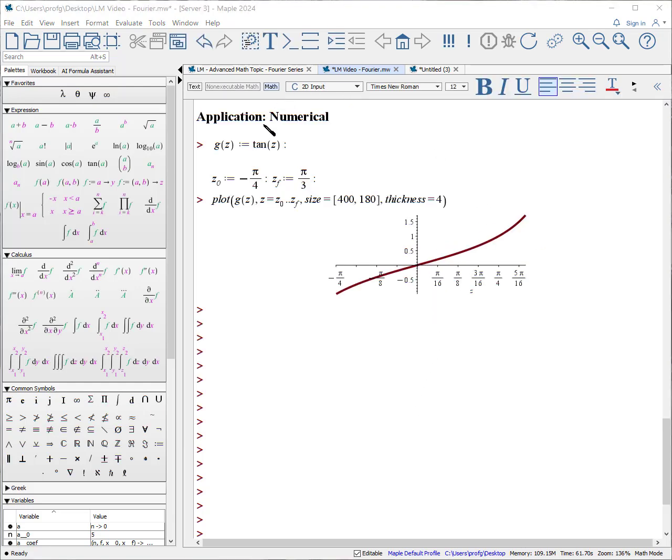The final example is not symbolic but rather numerical. Here is an example from minus pi over 4 to pi over 3 of the tangent. It turns out we're not going to find a closed form for a series approximation to this function between these two points.